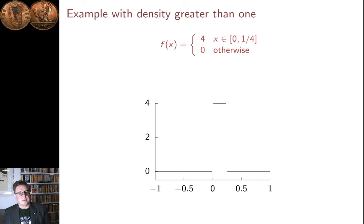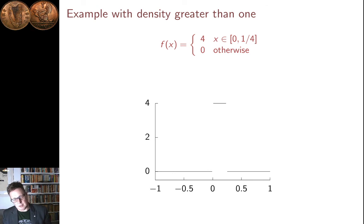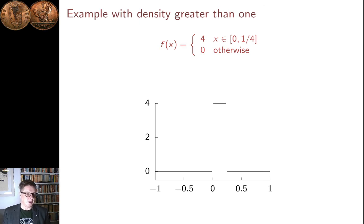So that's the continuous probability density and the cumulative — the machinery we use for describing continuous distributions. In the next lecture I'll talk about expected values for continuous distributions, and after that about the most commonly discussed continuous distribution, which is the Gaussian. Thank you.